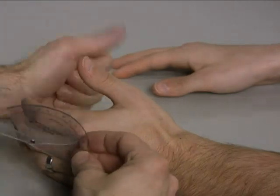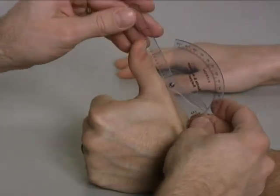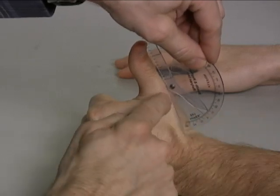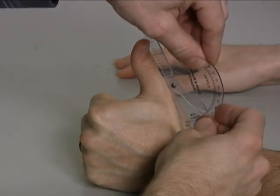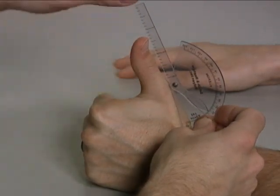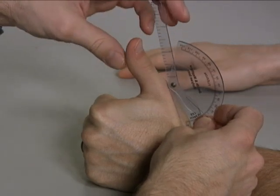Go ahead and bring your thumb back as far as you can. The stationary arm is simply placed flush against the metacarpal. The moving arm is placed flush against the proximal phalanx.